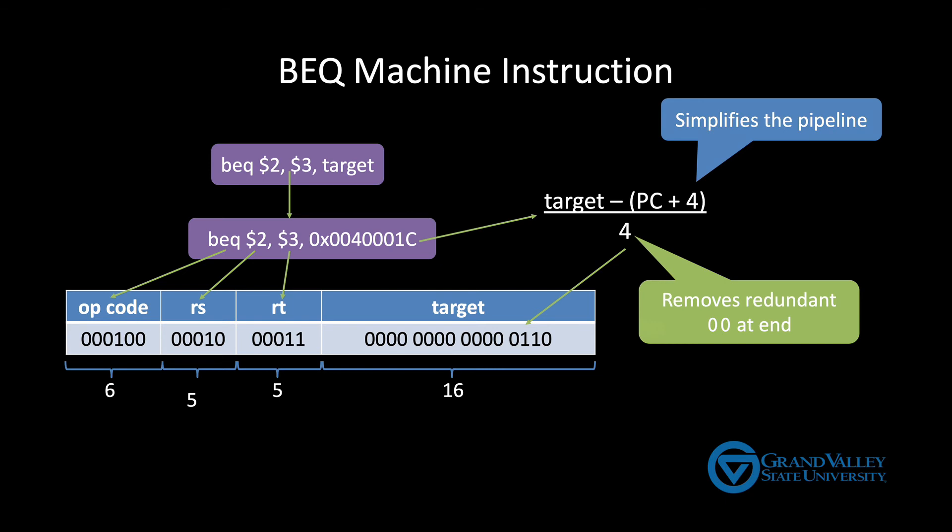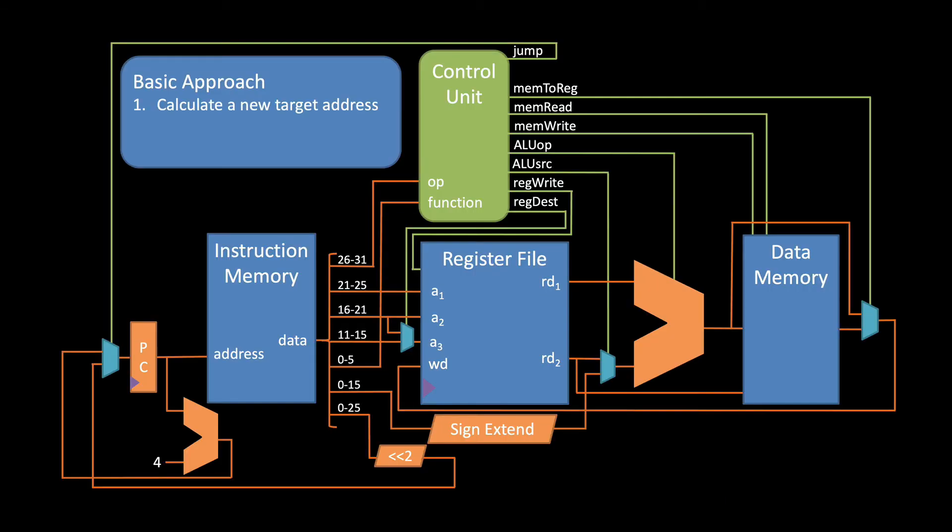So now that we know how the machine instruction's encoded, let's see how the CPU implements that instruction. So as with jump, the basic process is to calculate a new target address and then place that new target address in the program counter, which causes the CPU to execute that instruction next. But this time we should only modify the program counter if the condition is met.